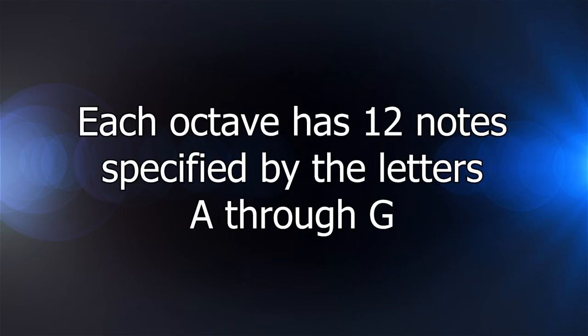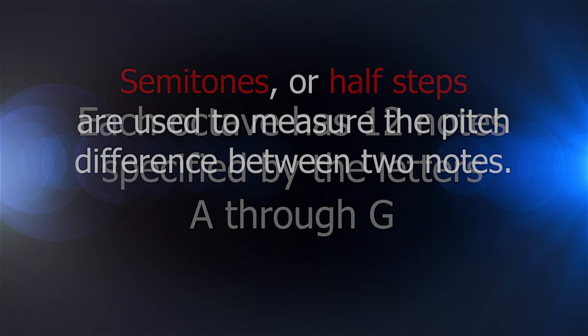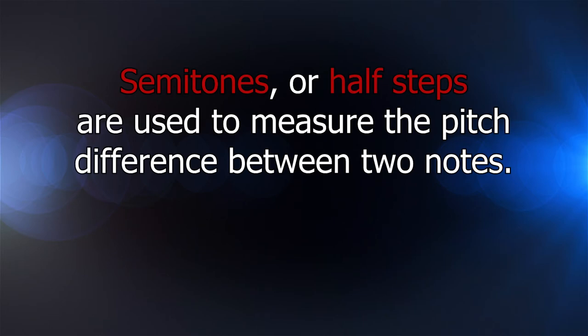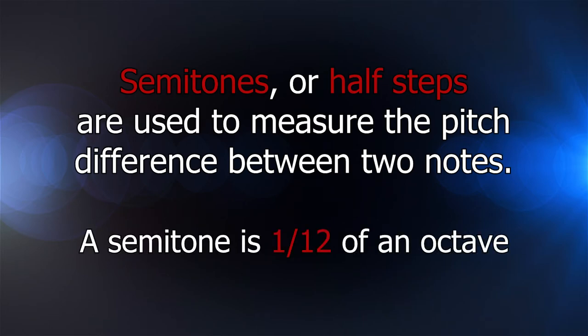In western music, each octave contains 12 notes consisting of the letters A through G. We measure the distance between each in semitones, or what we call half-steps. A semitone is one twelfth of an octave.